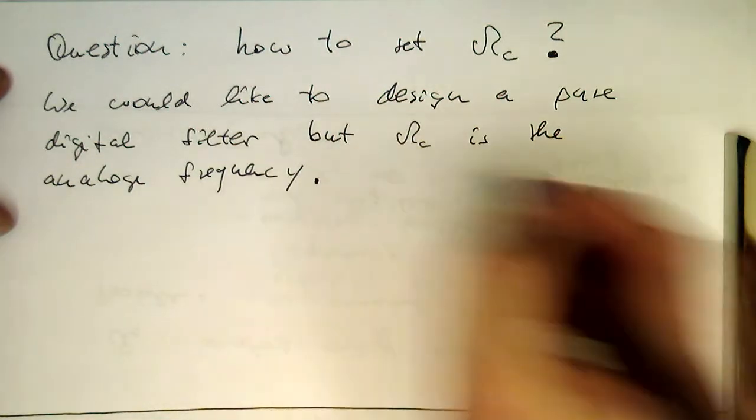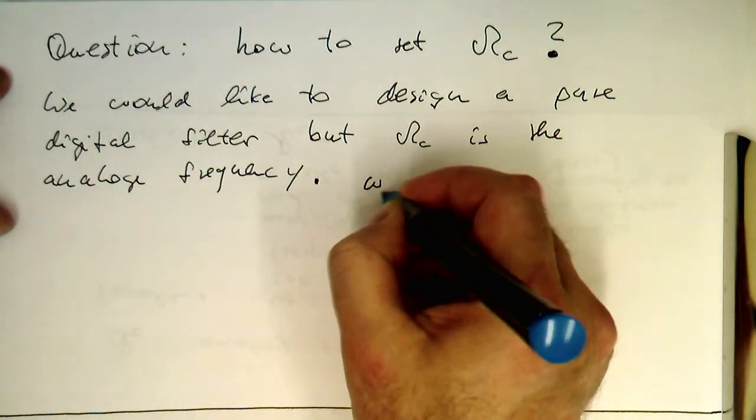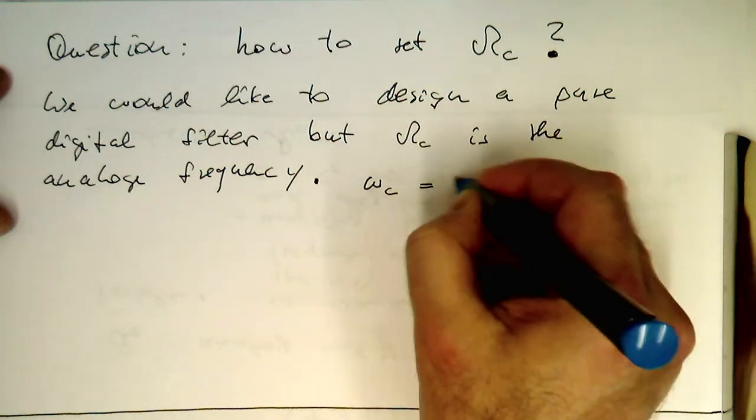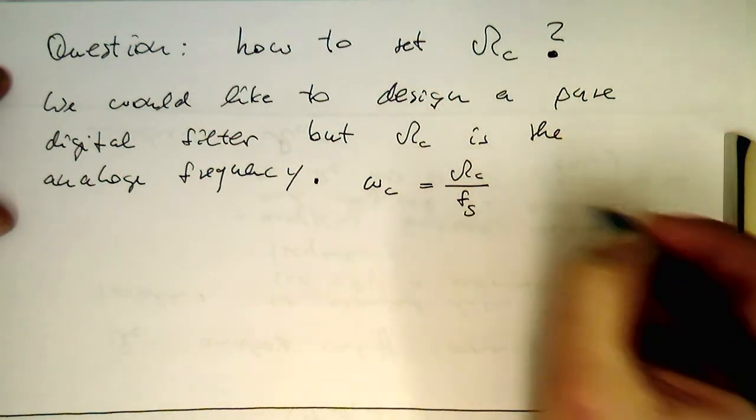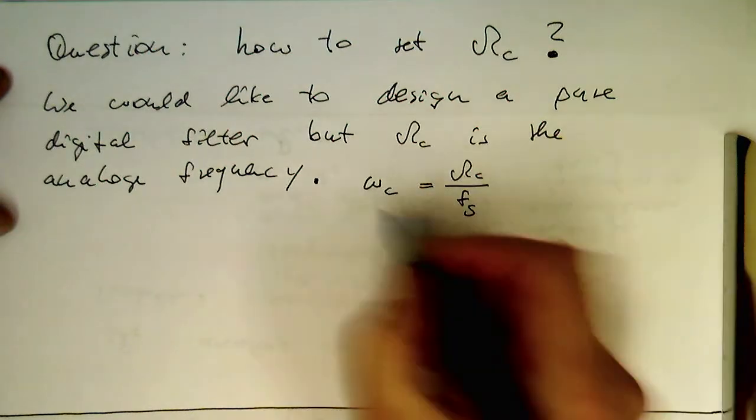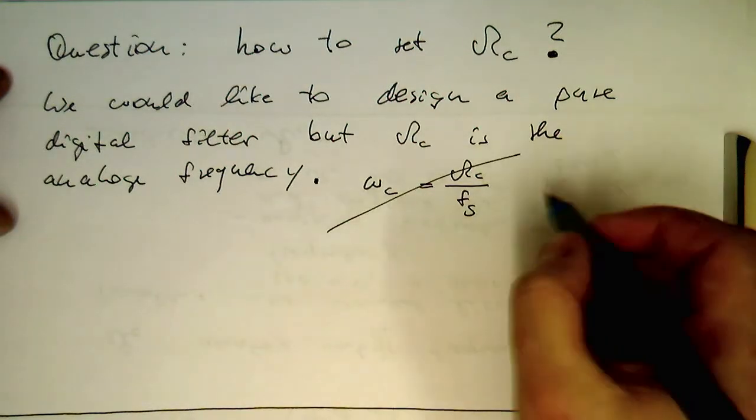So the problem is we cannot just equate omega_c with omega_c divided by fs, because this is not possible here. That's obviously a problem.